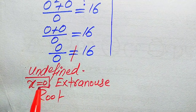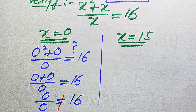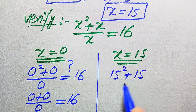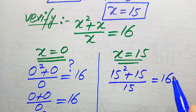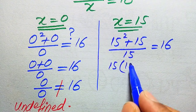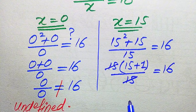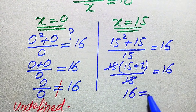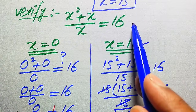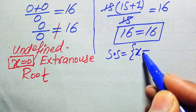So x equals 0 is the extraneous root because it does not satisfy the equation. Now we verify the second root x equals 15: substituting gives 15 squared plus 15, all divided by 15. Taking out common factor 15 from the numerator gives 15 times (15 plus 1) divided by 15, which simplifies to 15 plus 1 equals 16. Both sides equal 16, confirming x equals 15 satisfies the equation.